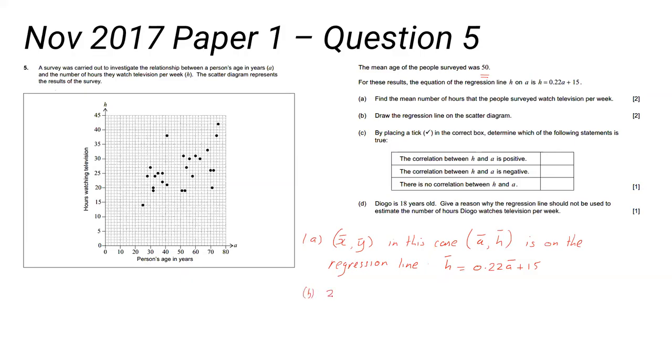Draw the regression line on the scatter diagram. It gives you the equation. The two marks are for these two things: it must go through the mean, that's one mark, and the second mark is the y-intercept must be correct. The y-intercept is 15. That's what they'll be looking at when they mark it. Does it go through that point there and does it go through 50, whatever the mean point is somewhere up here? The examiners will have an overlay that they'll put on top of your graph and check that it goes through those points within maybe a millimeter of tolerance either way.